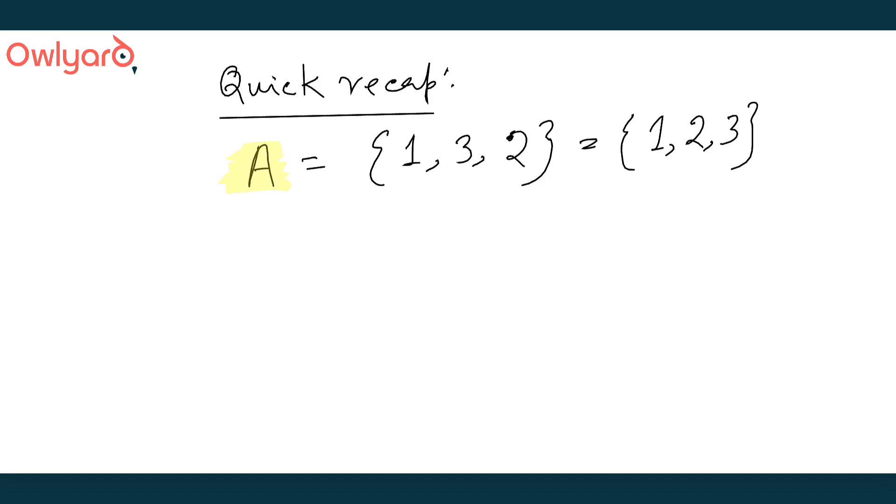Another thing we said is if we have to say that there is a member - let's say 2 belongs to A, or 2 is a member of A - then this is the notation that we use, which is the notation for "belongs to". We will write it this way. So this is our notational way of representing that 2 is a member of A or 2 belongs to A.